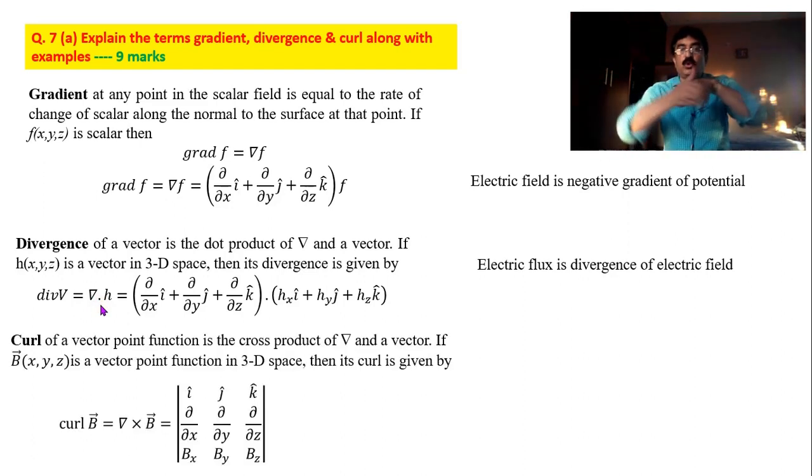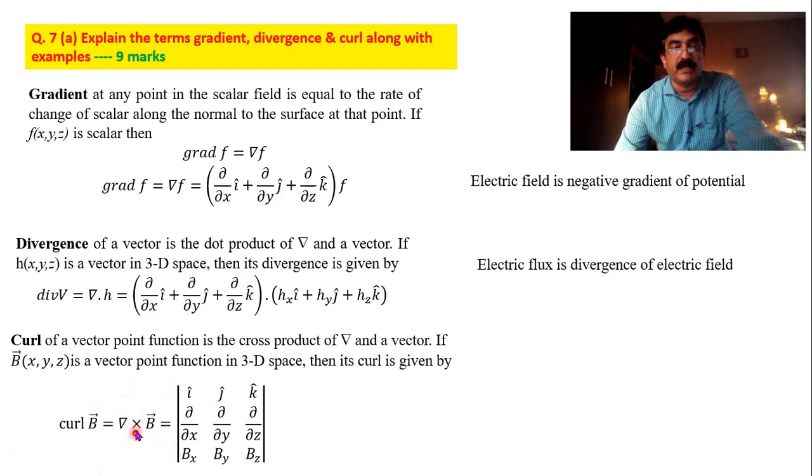Now comes curl. Curl is also a product, but this is not an ordinary product. This is not a scalar product. This is a vector product. It is a cross product. So definition: curl of a vector is the cross product of del and a vector. See in all the three whether it is gradient or divergence and curl we have del essentially. If del is ordinarily multiplied it is gradient, dot product if you take divergence, cross product if you take it is curl. Curl is a cross product of del and a vector. Del and a vector, magnetic field is a vector.